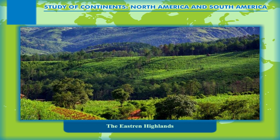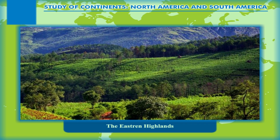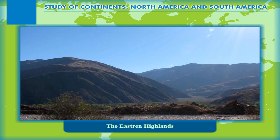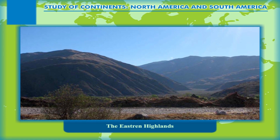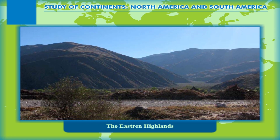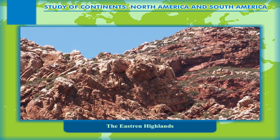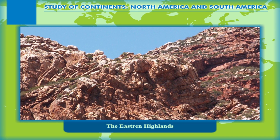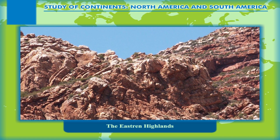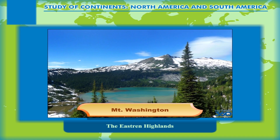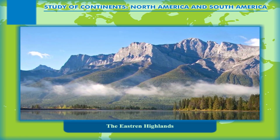The Eastern Highlands, also known as the Appalachian Highlands, lie in the countries of Canada and USA. They are less in height than the Western Cordilleras, due to erosion that has reduced their height. They are made up of ancient rocks and are old fold mountains. Mount Washington is the highest point in the Eastern Highlands.